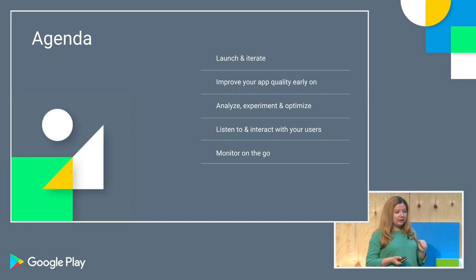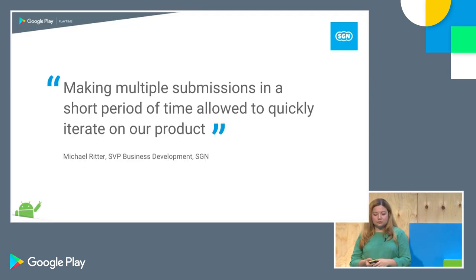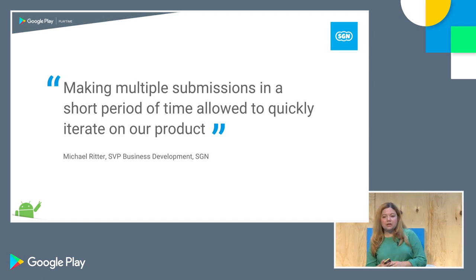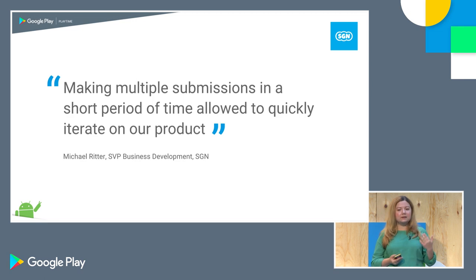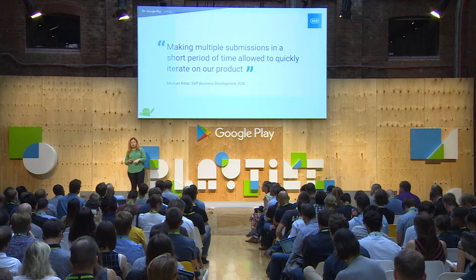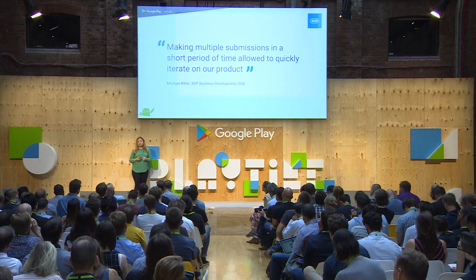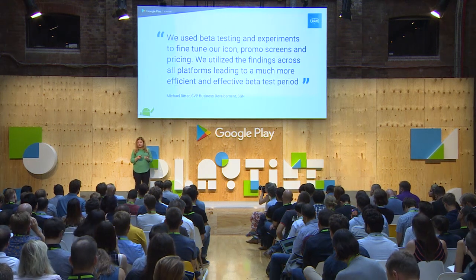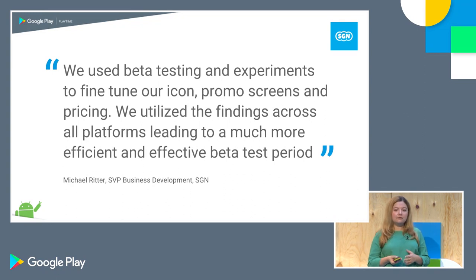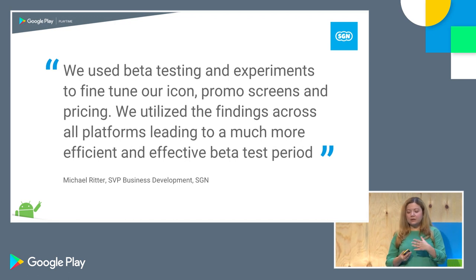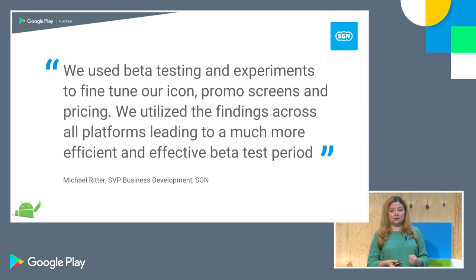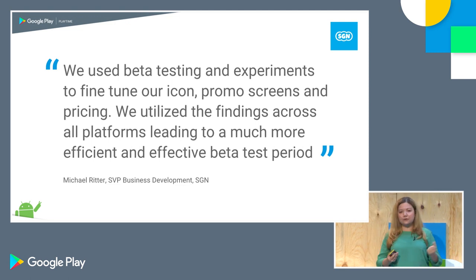Let's start with launching and iterating. I wanted to start with this quote from Michael Reiter, the SVP of Business Development at SGN. They shared feedback on why they launched Genies and Gems on Android first. Because they can iterate very fast on Google Play — publishing delays are very low — they were able to achieve very significant business outcomes. SGN are very heavy users of beta testing, store listing experiments, and a number of iteration tools. They also took findings from experimenting with our tools and applied them to other platforms, which is a very efficient way of doing business.